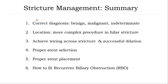In summary: Number 1, collect diagnosis or technique to get the final answer — benign, malignant, or indeterminate stricture. Number 2, precise stricture location, especially in hilar block. Number 3, achieve selective cannulation, adequate stricture dilation, and successful placement. Number 4, proper stent selection is very important. Number 5, apply correct technique of stent placement. And finally, you need to know how to fix recurrent biliary obstruction.